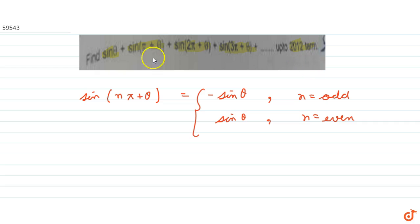Now we have to find the value of this series. Say this as A. So A, we are given as sin theta plus sin(pi plus theta) plus sin(2 pi plus theta) plus up till, see we have 2012 terms.